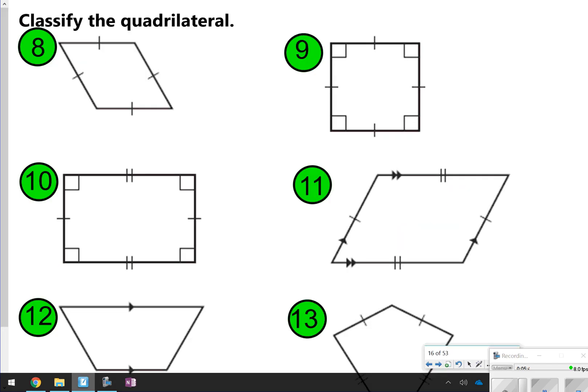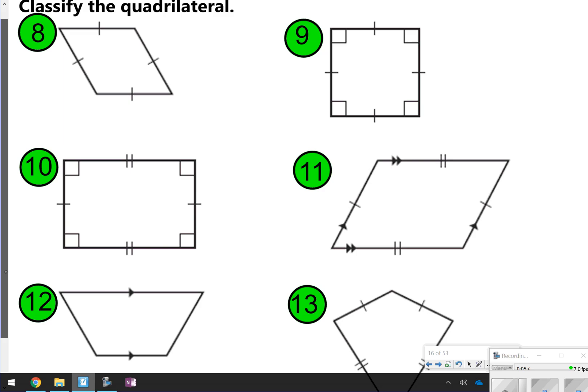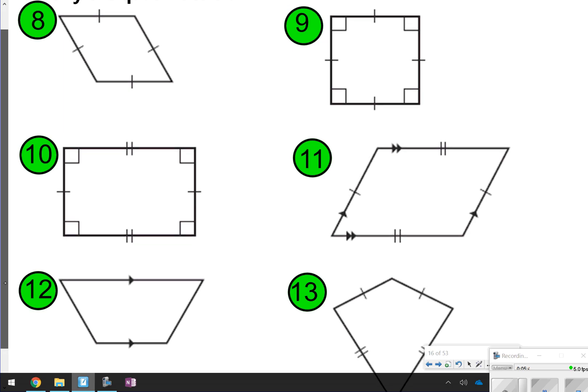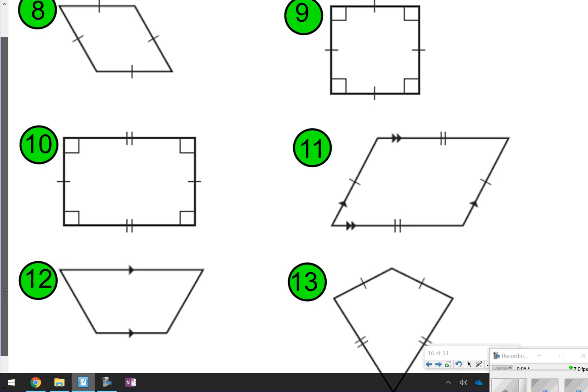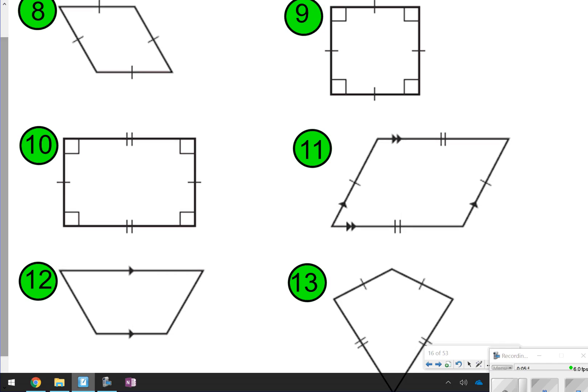These you're going to do on your own. These are the last 8 through 13 in your notes. It says classify the quadrilateral. I'm going to scoot this down so you can see the last one better. Go ahead and try numbers 8 through 13. Let's pause it real quick. And once you're done, click play.